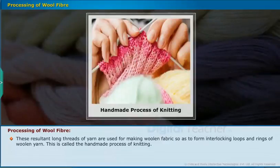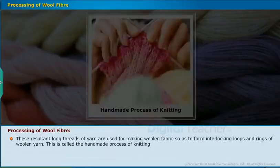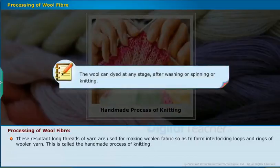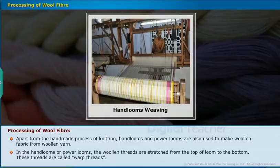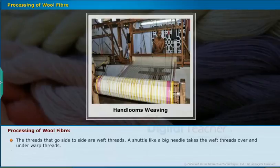The resultant long threads of yarn are used for making woolen fabric, forming interlocking loops and rings of woolen yarn. Note that wool can be dyed at any stage — after washing, spinning, or knitting. Apart from handmade knitting, handlooms and power looms are also used. In these looms, the woolen threads stretched from top to bottom are called warp threads, while the threads going side to side are called weft threads.